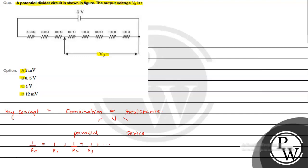Whereas for series, we calculate the equivalent for the same set of resistances as R equivalent equals R1 plus R2 plus R3 and so on.